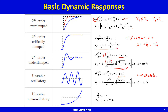You could also get an unstable non-oscillatory blow-up. The simplest dynamic element that gives this is like a lag but with a negative sign. Looking at the time solution of this equation, because tau is positive, e to the power t over tau blows up, and therefore you get this exponential blow-up kind of response.